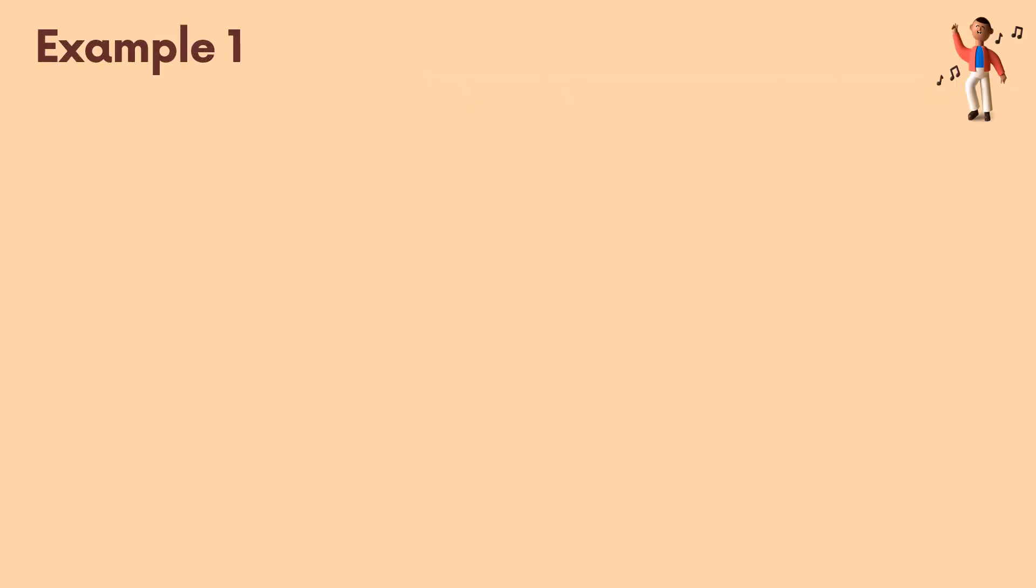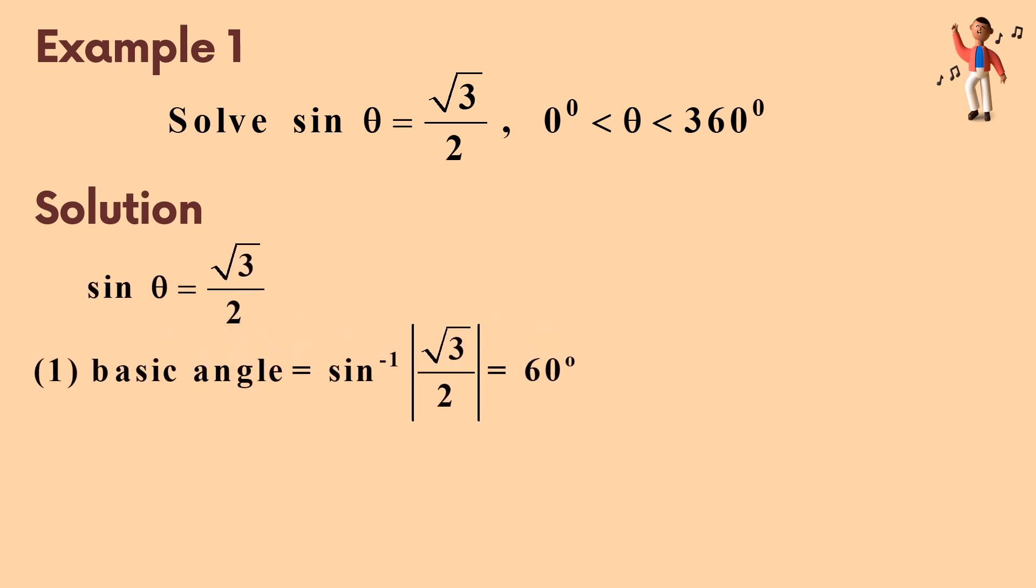Example number 1. Sin theta equal to √3 over 2. The range is 0 degree until 360 degree. The solution are, firstly, we must find a basic angle and we get 60 degree.